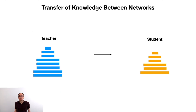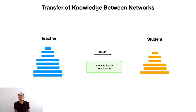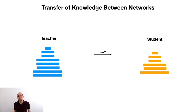Here we investigate knowledge transfer between a teacher and a student network. We are particularly interested in knowledge that helps the teacher generalize better — we want to capture its inductive biases and distill those into the student. In simple cases where teacher and student have the same architecture, this can be achieved by copying the weights. However, inductive biases are particularly interesting if the architecture differs, which is why we focus on functional transfer methods that do not rely on the weights for transfer.